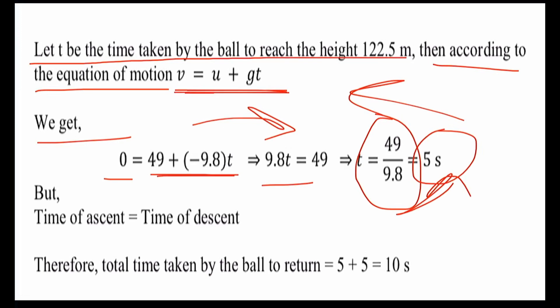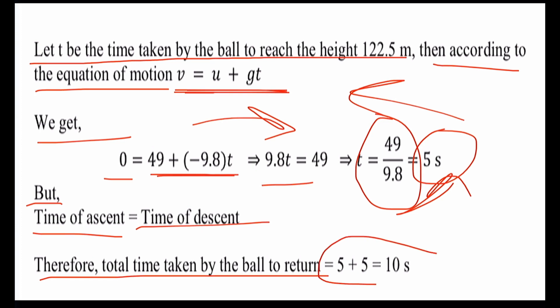The time to reach the maximum height is 5 seconds. Since the time of ascent equals the time of descent, the total time for the ball to return to the surface is 5 plus 5 equals 10 seconds.